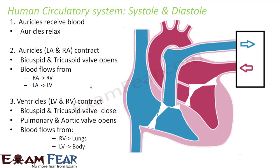The heart consists of the auricles and the ventricles — the right and left auricle and the right and left ventricle. The auricles and the ventricles have muscular walls, because of which those muscles can contract and relax. This contraction and relaxation of the auricles and ventricles actually leads to the beating of the heart.